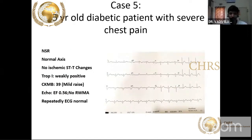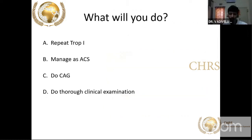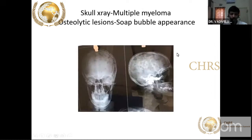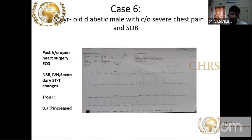An elderly frail lady with chest pain, weakly positive troponin, and normal echo — but with severe chest wall tenderness on palpation. An acute coronary syndrome patient should not wince with pain on palpation. This was a patient of multiple myeloma with osteoporotic lesions. Due to calcium disturbances, non-specific ST segment changes occurred, and troponin was elevated due to renal involvement — a classic ACS mimic.